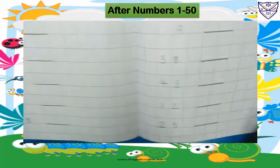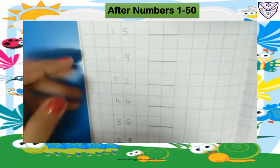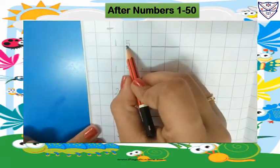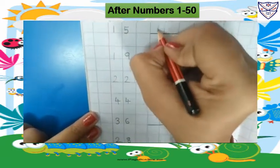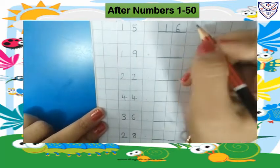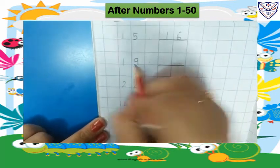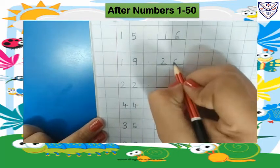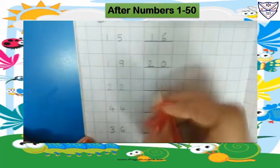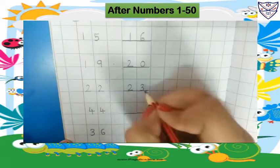Now we will fill in the after numbers. What will come after 15? 16. So we will write here 16. What will come after 19? 20. So we will write here 20. What will come after 22? 23. So we will write here 23.